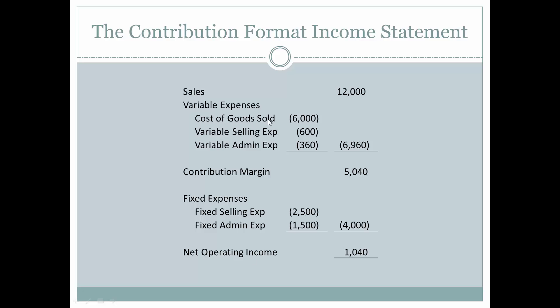Cost of goods sold is always considered to be a variable expense because it is indexed always in relationship to sales. It is the matching of the expenses of the items sold when they are sold that yields cost of goods sold. Therefore, since it is predicated upon things having been sold, it will be a variable expense and will change on a per-unit basis in relationship to sales.